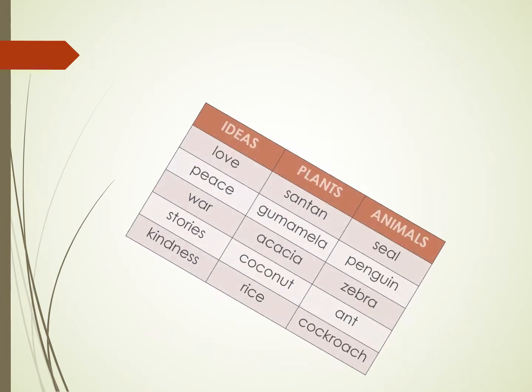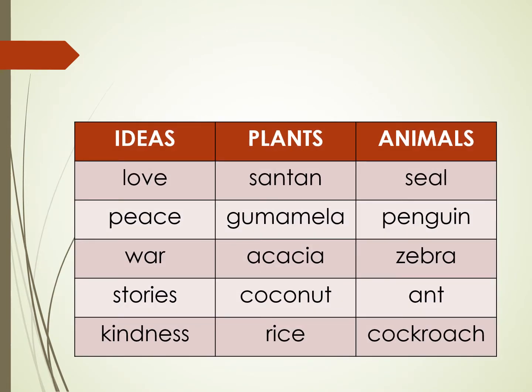Other examples of nouns are, for ideas, we have love, peace, war, stories, and kindness. For plants, santan, gumamela, acacia, coconut, and rice. And for animals, we have seal, penguin, zebra, ant, and cockroach.